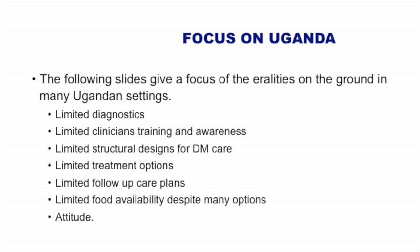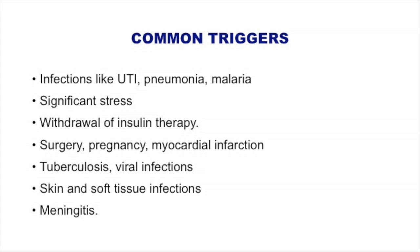Our common triggers are infections: UTI, pneumonia, malaria, septic diabetic feet, and alike. Omission of insulin therapy is very common in our setting for two reasons: unavailability, and the patient factor — many patients even when they have drugs feel like skipping them. Other triggers include surgery, pregnancy, myocardial infarction, tuberculosis, viral infections, skin and soft tissue infections, and meningitis. The patient needs an extensive workup in history, examination, and investigations. In my practice, most patients with malaria, TB, and DKA have passed away.